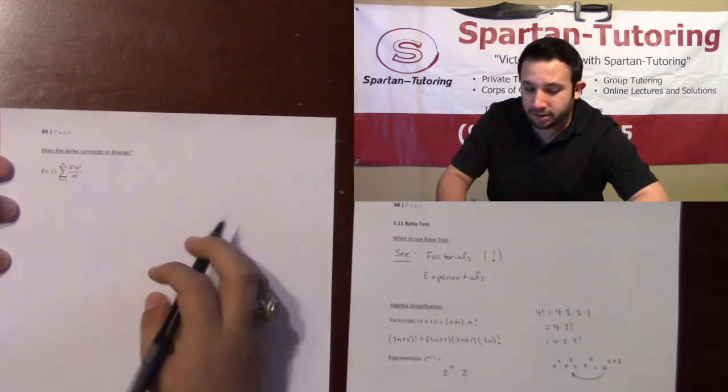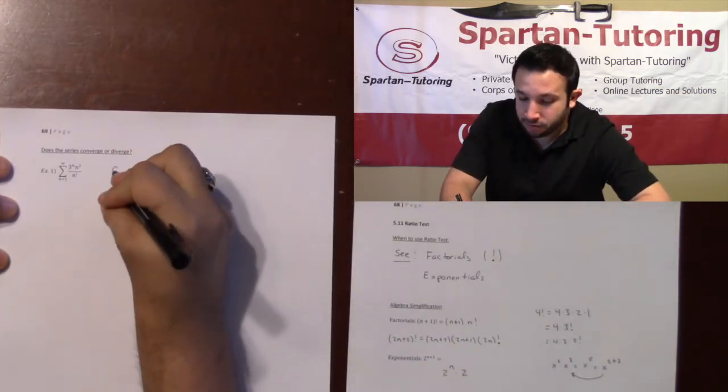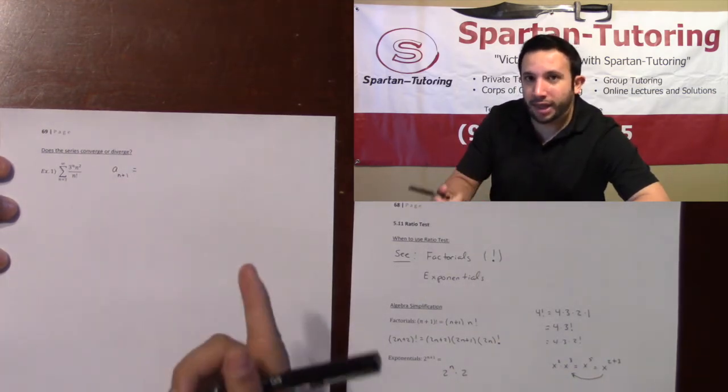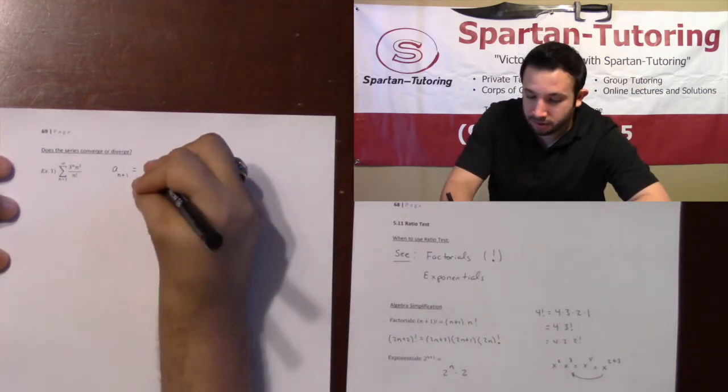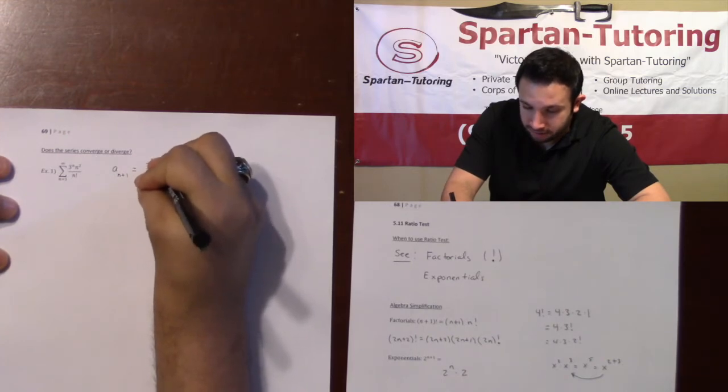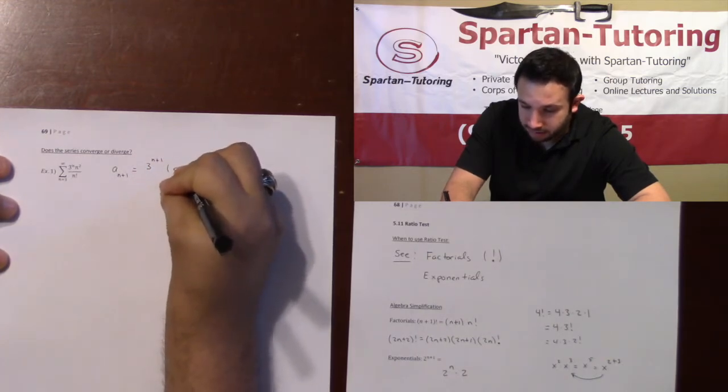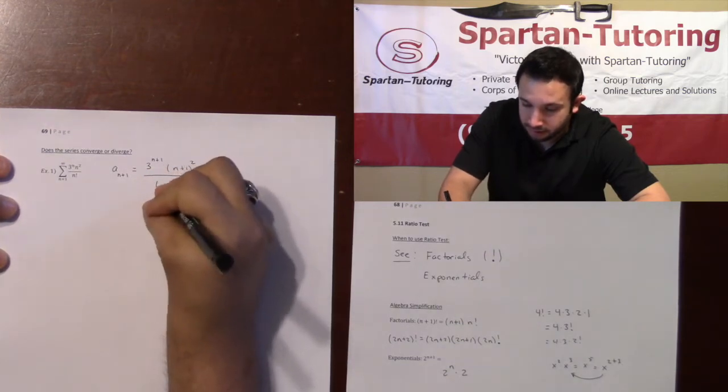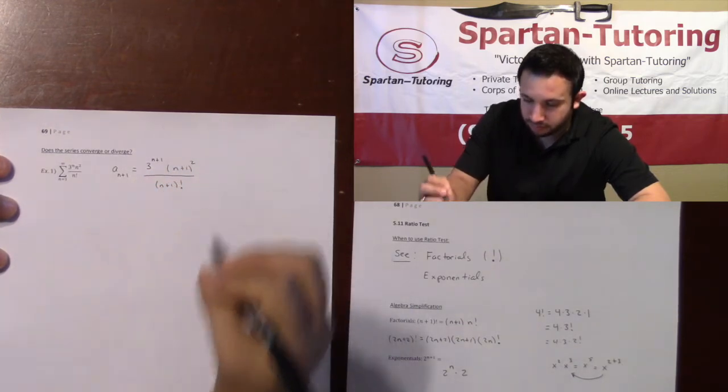So the first thing that I like to do is I like to find my a_n plus 1 off to the side. So a_n plus 1 is what you get when you replace every n with an n plus 1. So this will be 3 to the n plus 1 times n plus 1 squared divided by n plus 1 factorial.